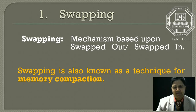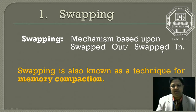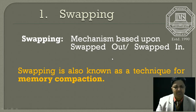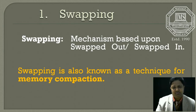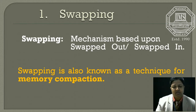Swapping is a mechanism which is based upon a technique known as swapped out and swapped in. Whenever any process which resides in main memory needs any input/output device, that process has to be swapped out from main memory to the secondary storage. Secondary storage is also known as backing storage. It will be swapped in from secondary storage to main memory when that process completes its task.